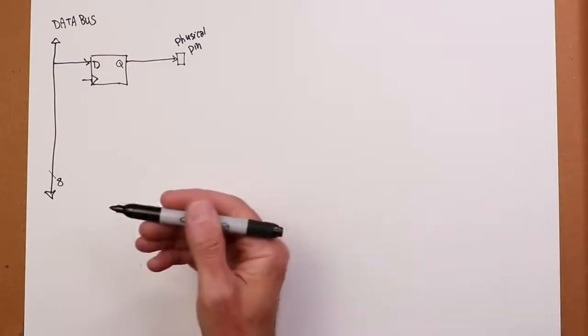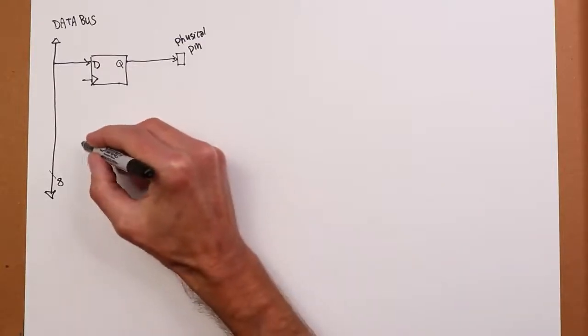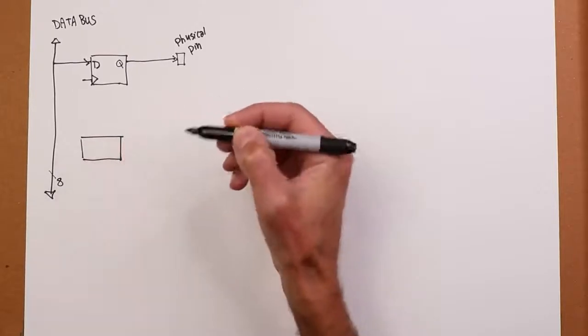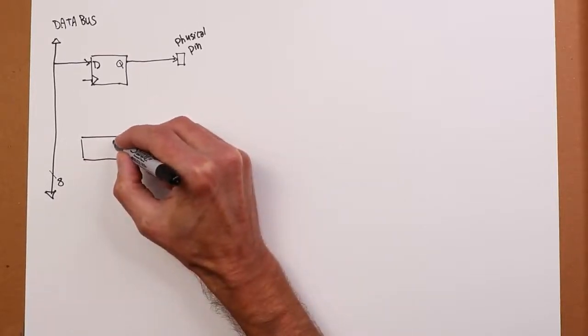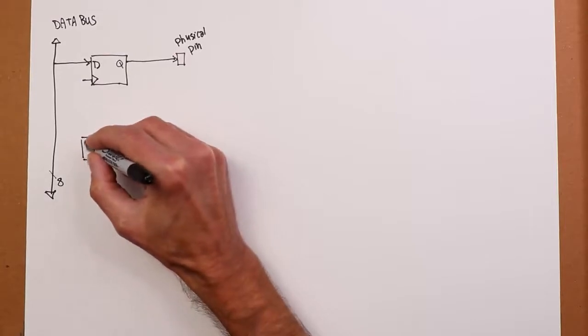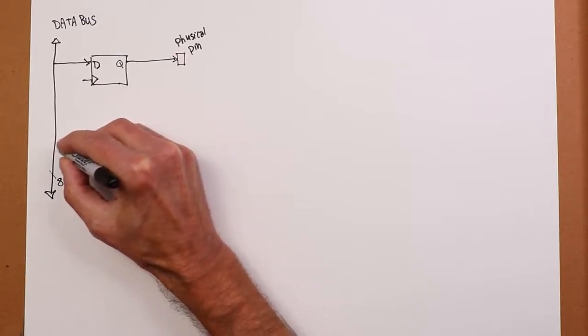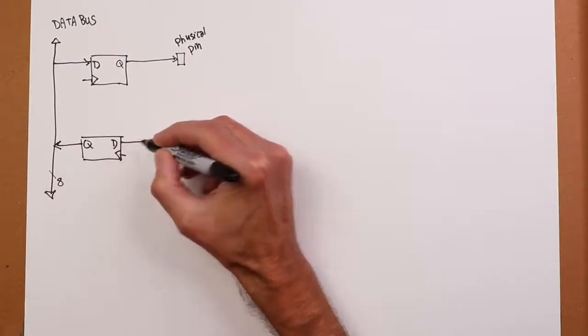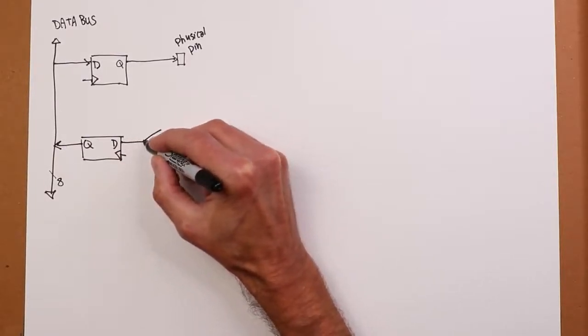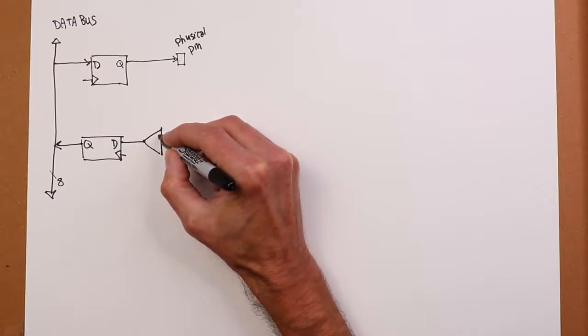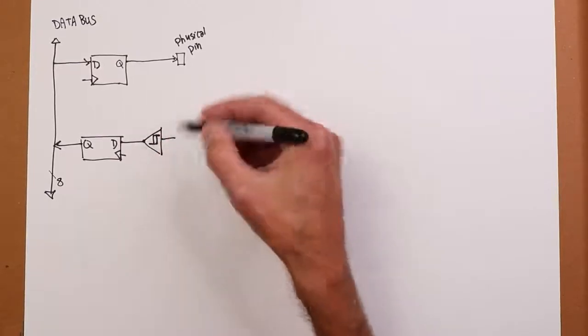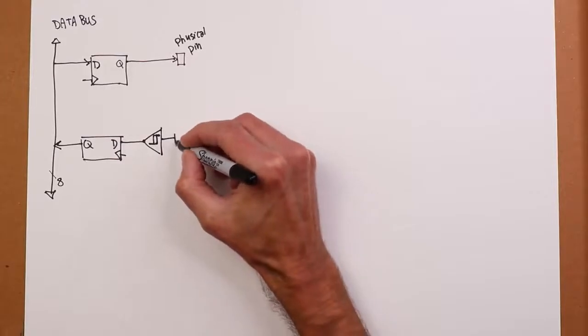Okay, going the other way, same sort of deal. I'm just going to flip this around. All right, clocking circuitry and so forth. Q goes out here. And again, highly simplified. We would probably have out here a Schmidt trigger to clean up any dirtiness, if you will, on our physical pin. So here's another pin.